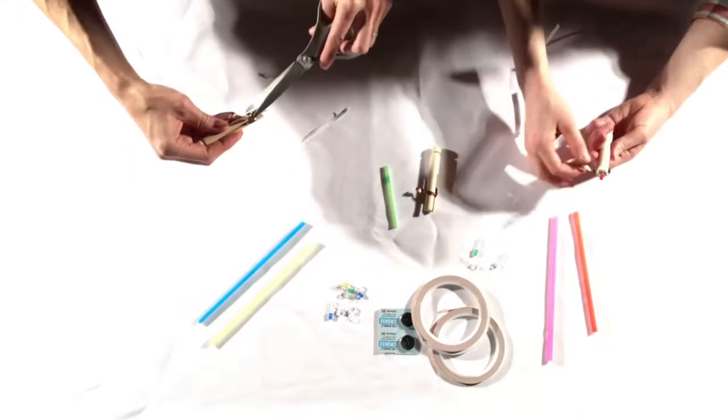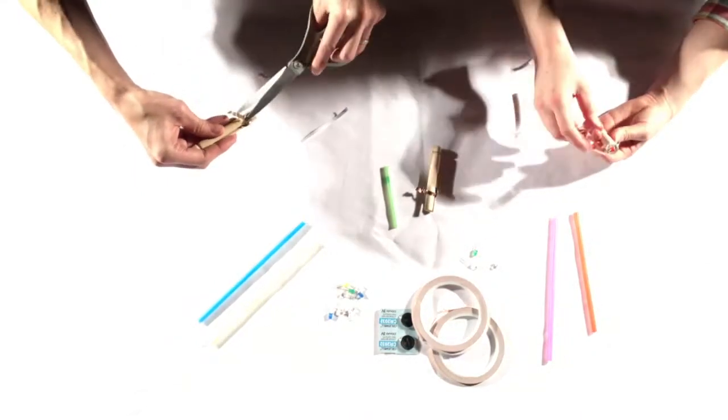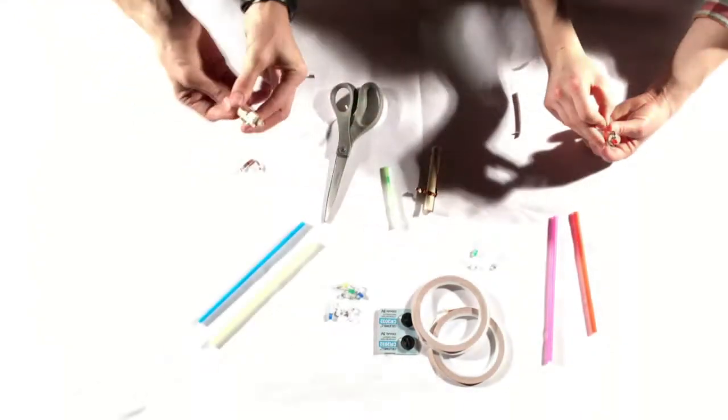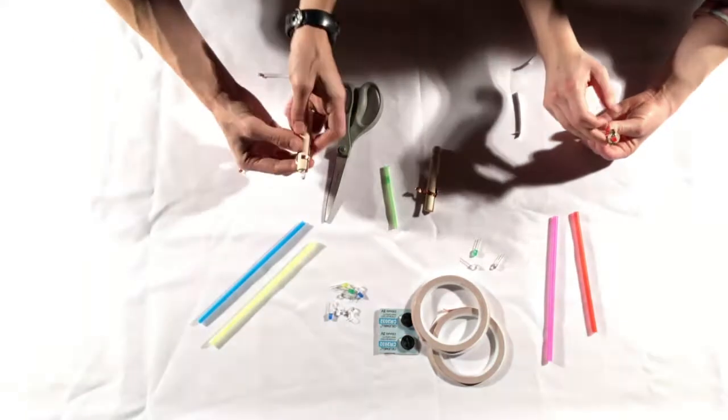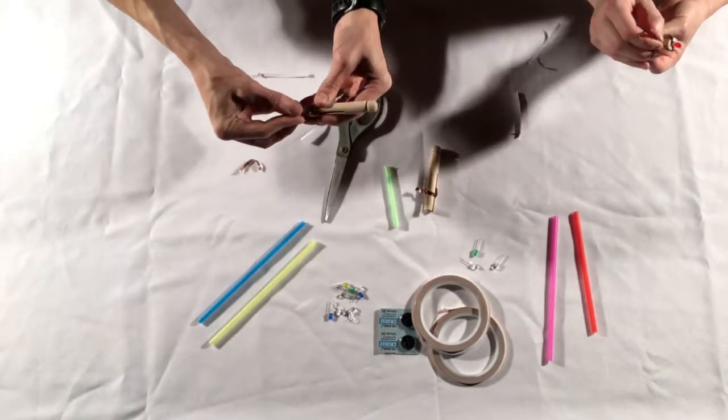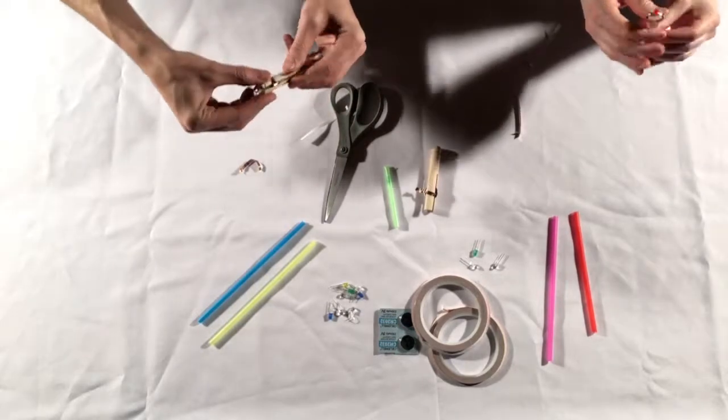And then do the same thing with the positive side of the LED that's sticking out. You can go ahead and just tape it straight to the LED, but then your lightsaber will always be on.